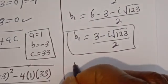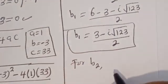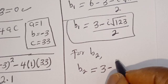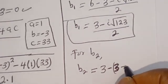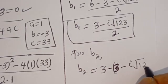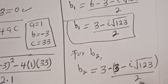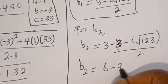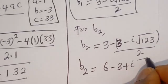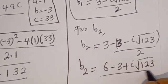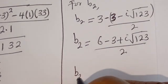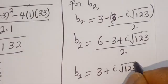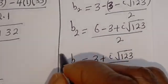Also for B2: B2 is equal to 3 minus A2, which is 3 minus (3 minus i√123)/2. This gives (6 minus 3 plus i√123) divided by 2. So B2 is equal to (3 plus i√123) divided by 2. This is the value of B2.